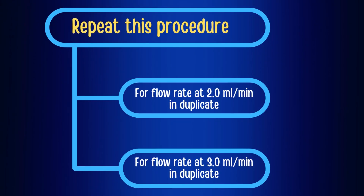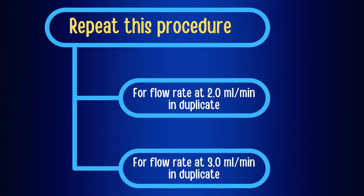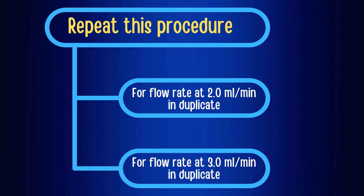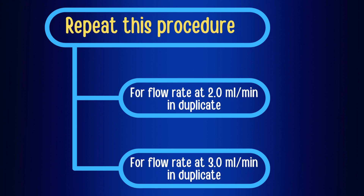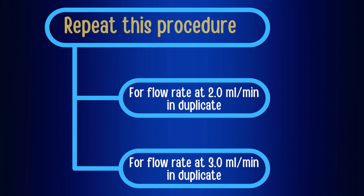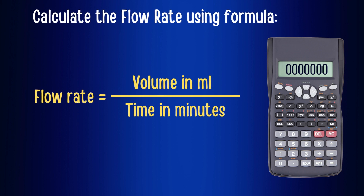Repeat this procedure in duplicate for flow rate at 2.0 ml per minute and 3.0 ml per minute, and calculate the flow rate using the same formula.